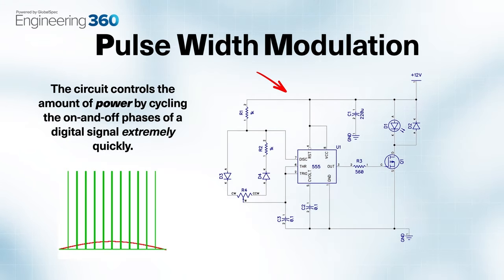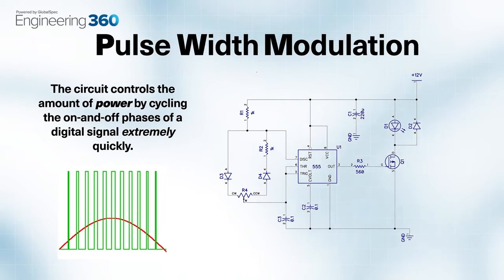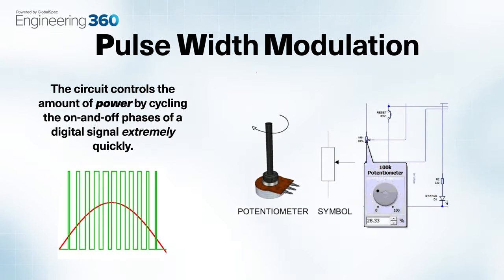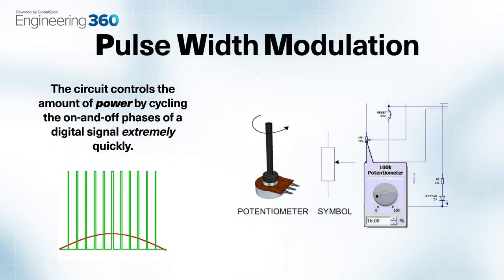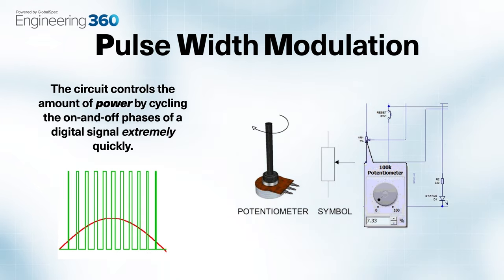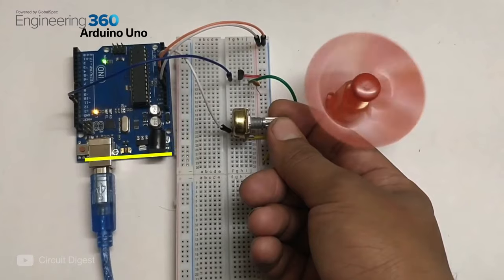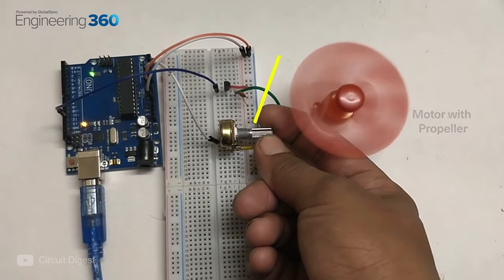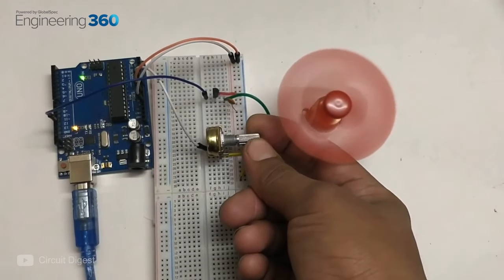PWM, or pulse width modulation, is a circuit that controls the amount of power given to a device by cycling the on and off phases of a digital signal extremely quickly. Varying the width of the high part of the cycle using a potentiometer results in a different voltage across the device and therefore a different speed. Using the built-in PWM circuitry in the Arduino Uno, we can control the speed of a DC motor using a potentiometer just like this.